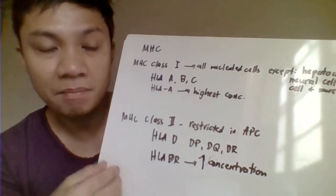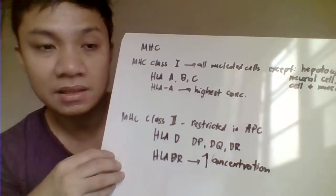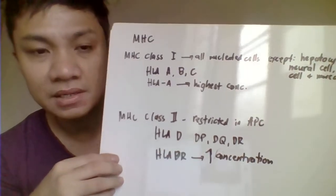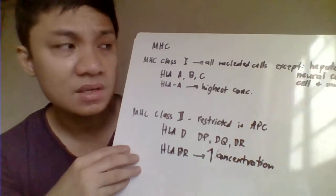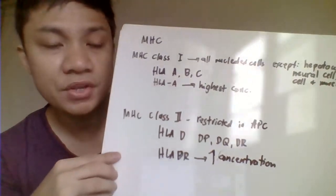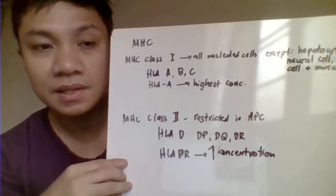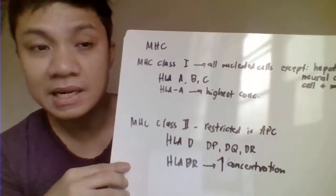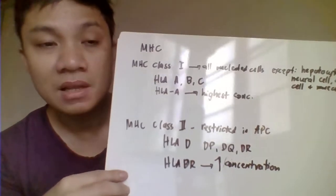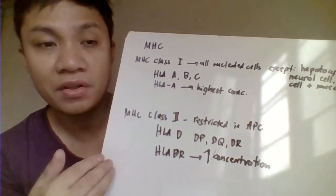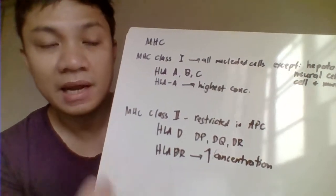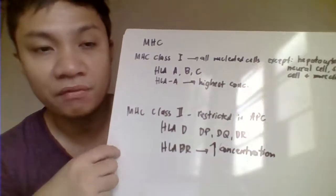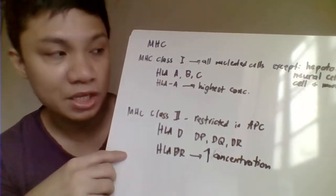However, MHC class 1 is not expressed by the following cells: hepatocytes, keratinocytes, neuronal cells, sperm cells, and muscle cells. Therefore, HLA typing for class 1 is not a requirement for those types of organ or tissue transplantation.